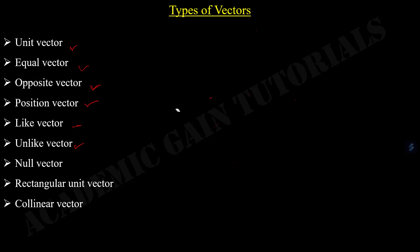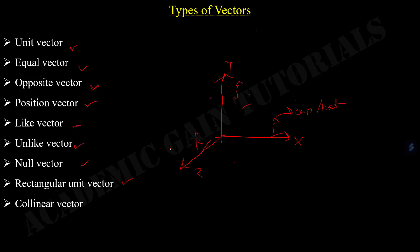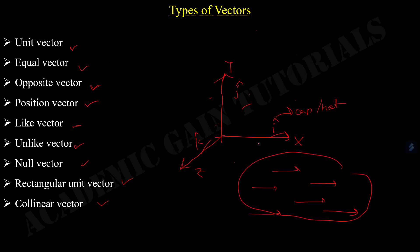Next is the rectangular unit vector. Let us draw a three-dimensional Cartesian system with x-axis, y-axis, and z-axis. In the x-axis we represent a unit vector known as î (i-cap). In the y-axis we represent a unit vector ĵ (j-cap), and in the z-axis we represent a unit vector k̂ (k-cap). These î, ĵ, k̂ are known as rectangular unit vectors. Finally, collinear vectors: if two or more vectors are directed along the same line or parallel to one another, they are called collinear vectors.